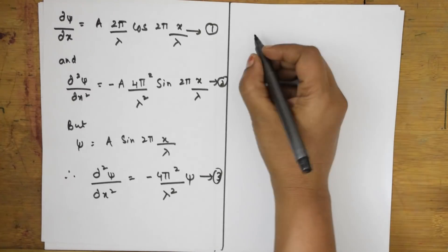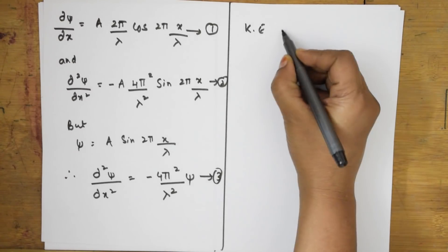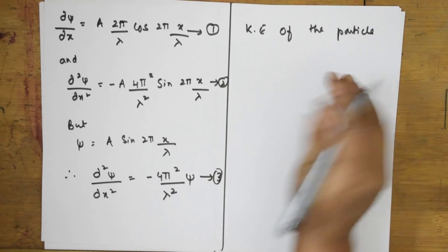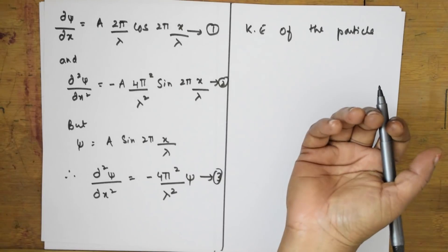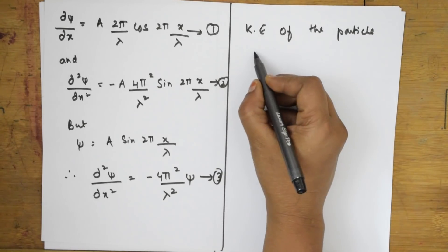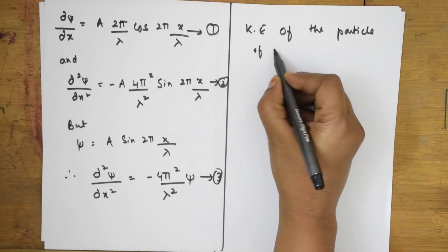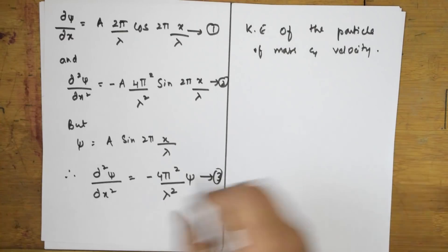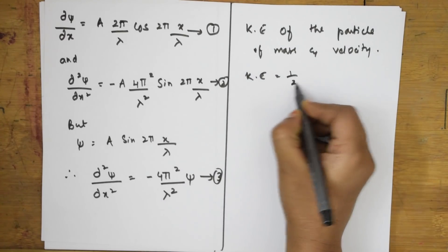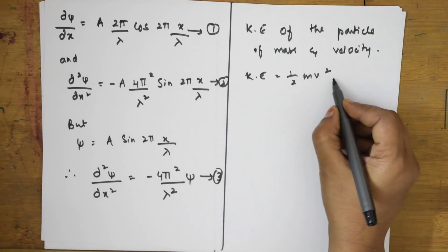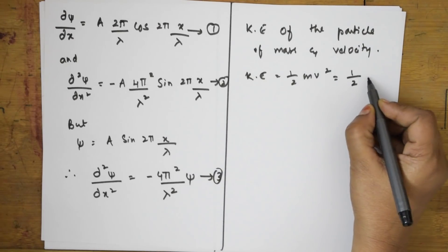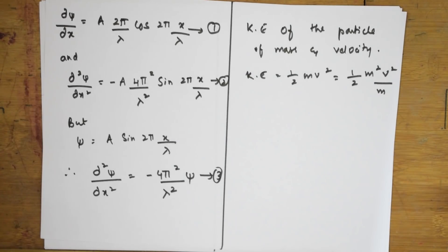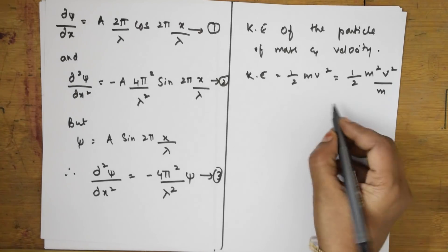Now we consider the kinetic energy of the particle. The particle has mass and velocity. The kinetic energy formula is KE = ½mv². This can also be written as KE = ½(m²v²)/m. Let us call this equation four.